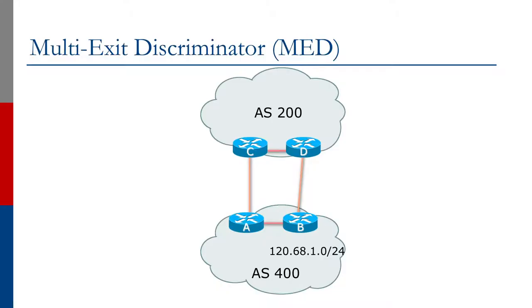We will now look at the multi-exit discriminator, more often called MED or the BGP metric. The multi-exit discriminator is kind of like local preference but used in the opposite direction. Referring to the diagram, you'll see two autonomous systems AS200 and AS400. We're sitting in AS400, originating a prefix 120.68.0.0/24, and we have two paths from our AS to our neighboring AS200. The question is: how do we tell AS200 which path traffic should take to reach our 120.68.1.0/24?